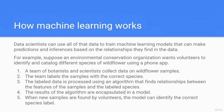When new samples are found by volunteers, the model can identify the correct species label. These are the simple steps of how machine learning works.